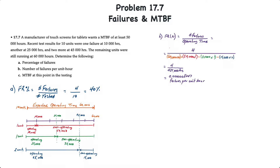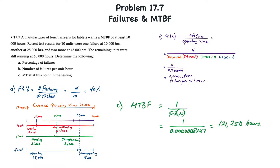That's a really small number and somewhat meaningless when we look at it, which is why we use mean time between failures, or MTBF. MTBF is equal to the reciprocal of the number of failures per unit hour, or one over FRN. Taking one over the number we just calculated, the mean time between failures is 121,250 hours — a lot more meaningful than 0.0000008247.